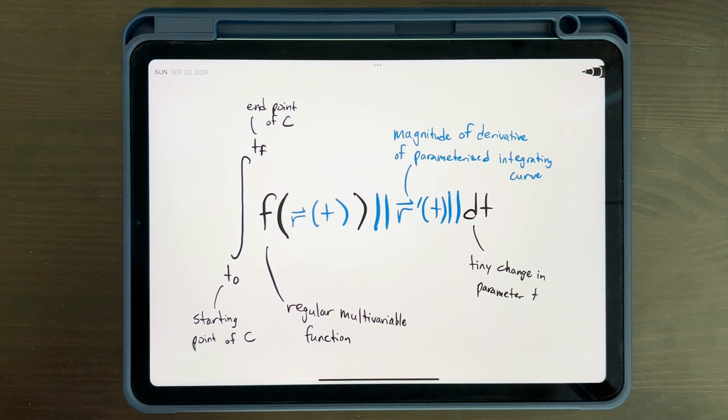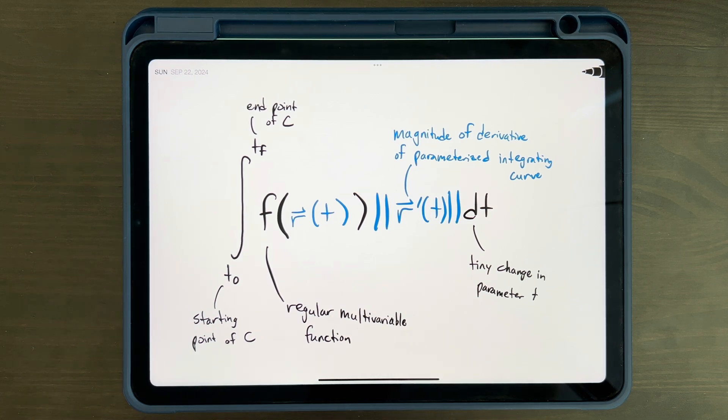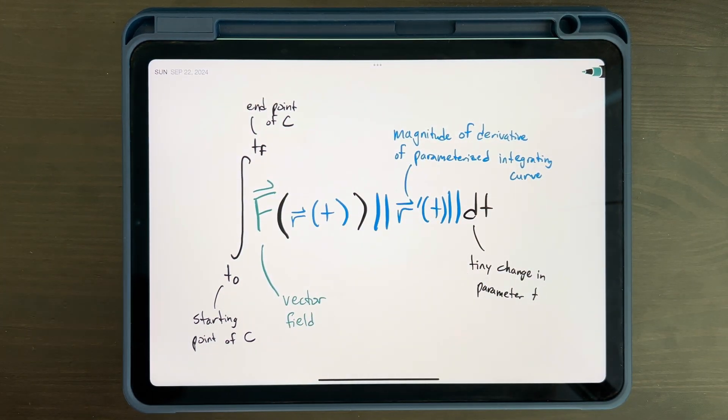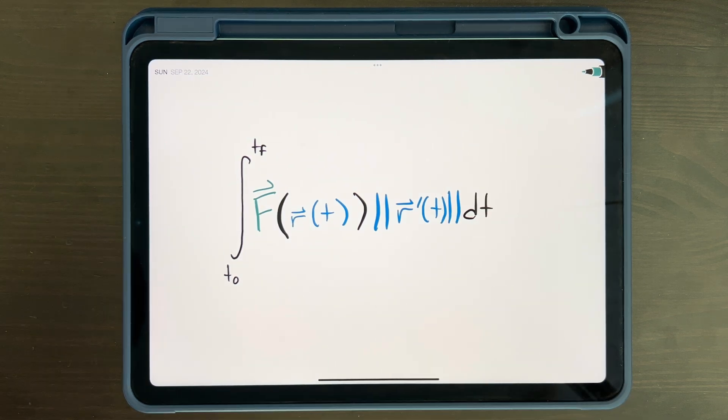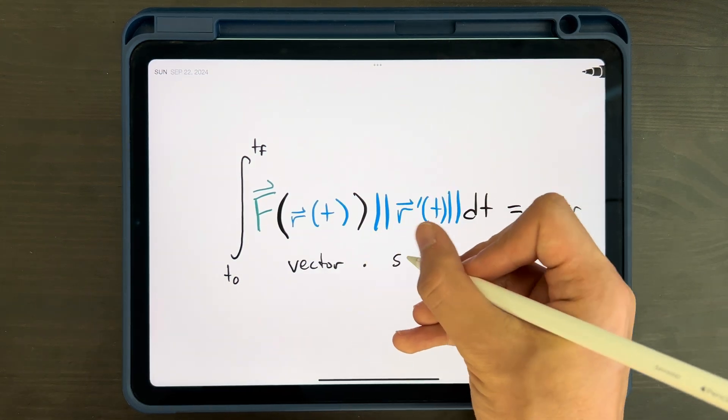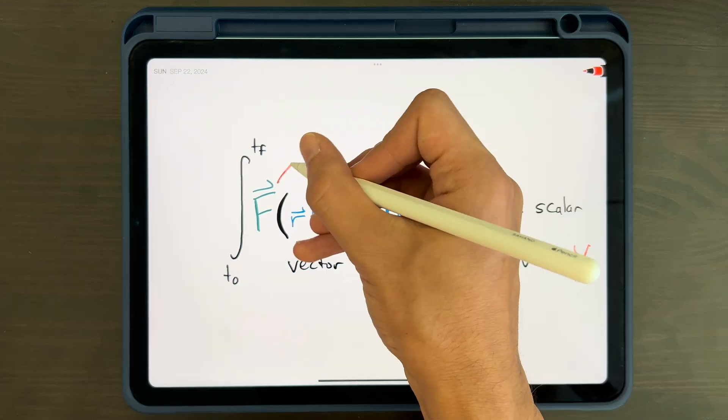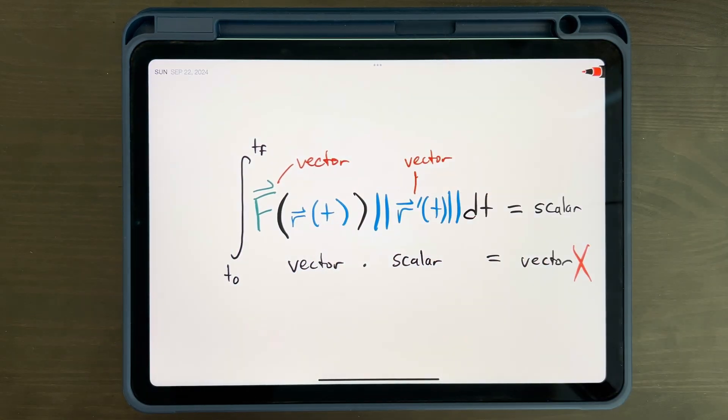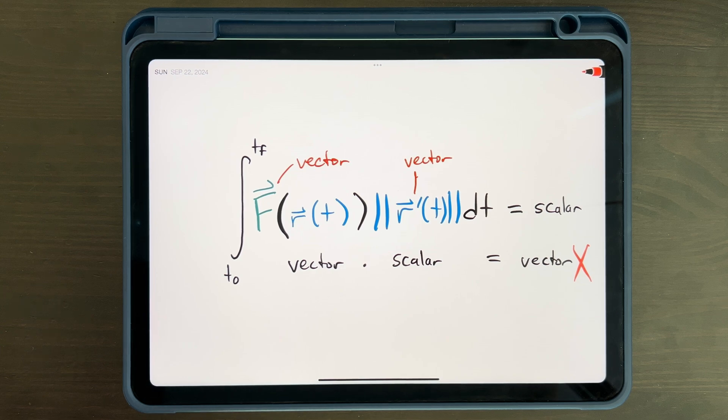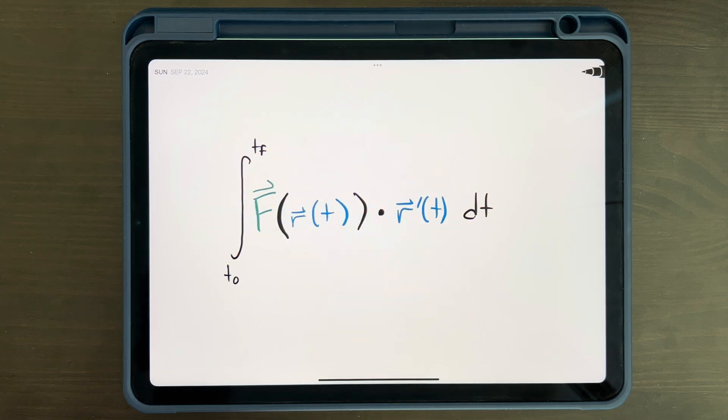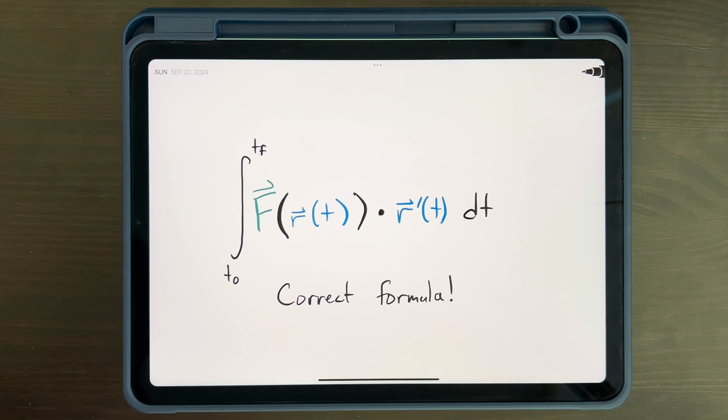Now, what if we just switch the regular function f in this formula with our vector field, uppercase F? Well, then we end up with this: a vector field multiplied by the magnitude of a vector-valued function, which is a regular scalar function. But that doesn't quite work. We need our line integral to equal a single scalar value, and multiplying a vector by a scalar gives a vector. Since we have two vectors in this integrand, the vector field f and the vector-valued function r prime of t, we can use a different operation: the dot product. So let's just take the dot product of these two, and BAM! This turns out to be the correct formula for the line integral of a curve over a vector field.